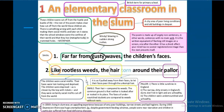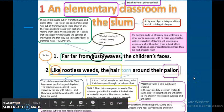In the bottom you will see, in 1930s living in a slum was an appalling experience because of very poor buildings, narrow streets, and bad hygiene. During 1930 depression there was huge unemployment. So despite government feeding schemes, people were near starvation, and children in particular suffered from food deficiency diseases.